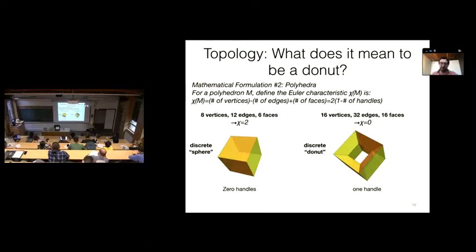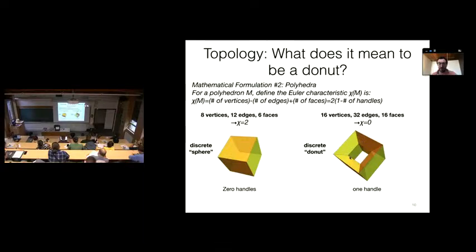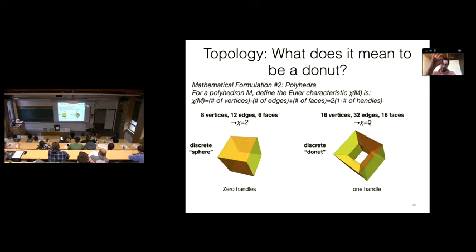Now we can look at our discrete version of a donut. Going through and counting: 16 vertices, 32 edges, and 16 faces — so chi equals zero. This thing has one handle; you can reach through it, it has one hole. The discrete polyhedral torus correctly gives Euler characteristic zero.